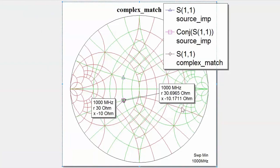The two points now pretty much overlap. They are not perfectly the same value but close enough to what we want. The source will see an impedance equal to the complex conjugate of its own impedance, ensuring maximum power transfer to the load. Next, we will verify this by setting up a schematic with a source impedance of 30 plus 10j and a load impedance of 57 plus 39j, and check that the reflection coefficient is exactly zero.